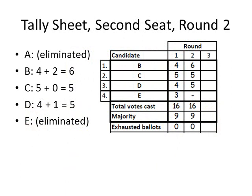The ballots below the sticky notes are counted and added to the number in the previous column of the tally sheet. B received two additional votes — 4 plus 2 is 6. C did not get any more votes — 5 plus 0 is 5. D received one additional vote — 4 plus 1 is 5. These numbers are written on the tally sheet. The votes are totaled and a majority is computed. No candidate gets a majority in this round, so the candidate with the fewest votes must be eliminated.